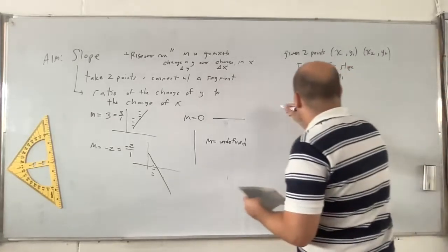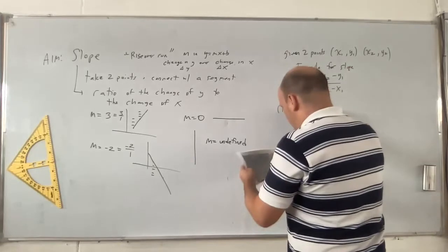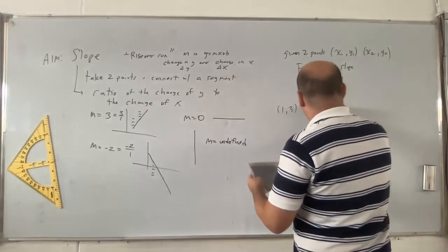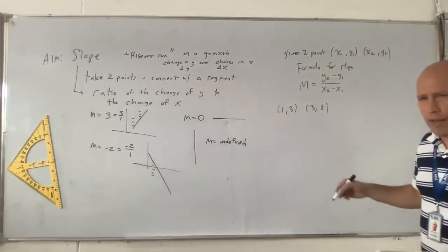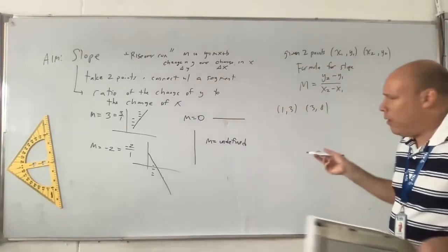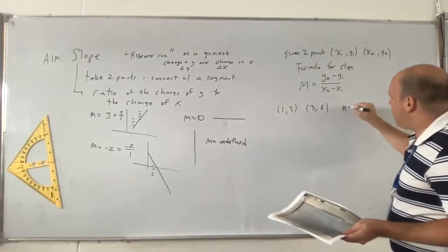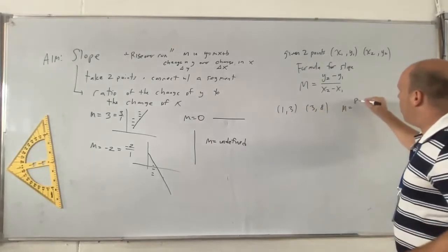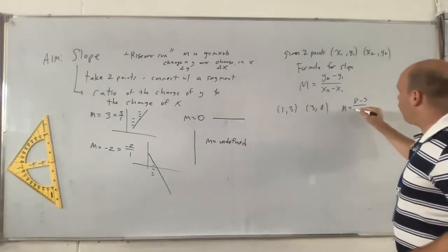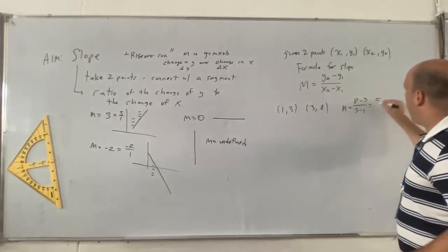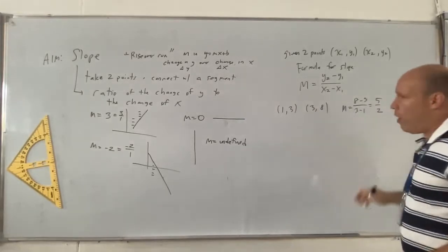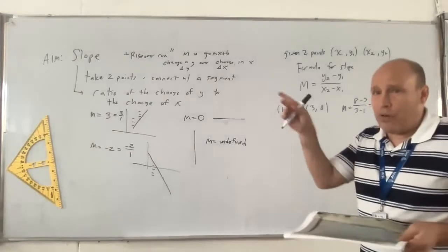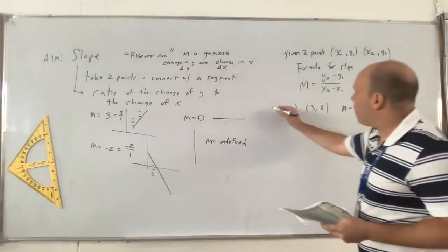Let's take some points — how about (1, 3) and (3, 8). Find the slope between these two points. We know m equals 8 minus 3 over 3 minus 1, so it's 5 over 2. The slope is 5/2. It's positive — two and a half — it's increasing.